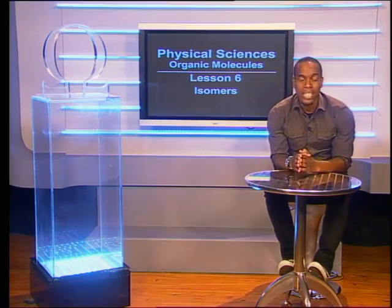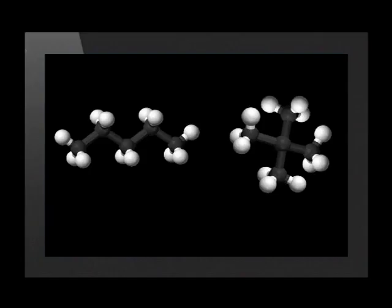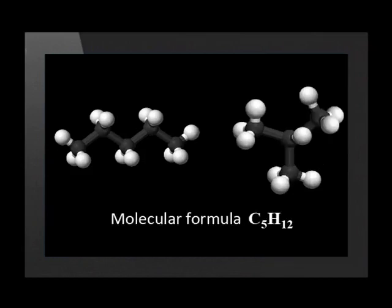Do you remember what an isomer is? The structural formulae of organic molecules shows us the exact positions of the atoms, but sometimes the atoms in a molecule are not always at the same position. Here is an example. Can you work out the molecular formula for each of these substances? Did you find that they both have the same molecular formula, C5H12? We thus have two compounds with the same molecular formula but different structural formulae. These compounds are called isomers.